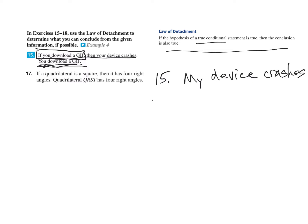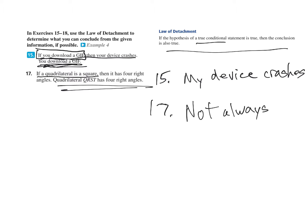Number seventeen: if a quadrilateral is a square — there is your hypothesis. The last part says quadrilateral QRST has four right angles. Does having four right angles mean it's a square? Not always. A quadrilateral that is a square means all four sides are congruent and you have four right angles — it's the 'and' part that you need. So we can't really conclude it from four right angles alone; it's not always true.